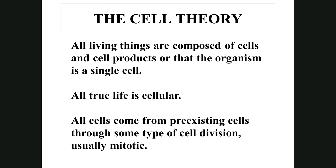The basic unit of life is a cell — that's what the second statement says. All true life is cellular. Cells can be plant cells, animal cells, protozoans, fungi, bacteria, and even smaller ones called mycoplasmas. The last statement: all cells come from pre-existing cells through cell division, usually mitotic. Cells do not come into existence spontaneously — just like animals, if they don't reproduce, they cease to exist.